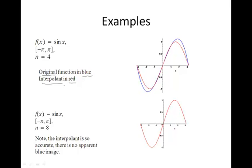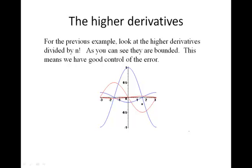All we need to do for this function is jump up the number of points to eight. And then you can see the interpolant and the function are so close that they're visually indistinguishable. Although there is error there, you just can't see it visually.